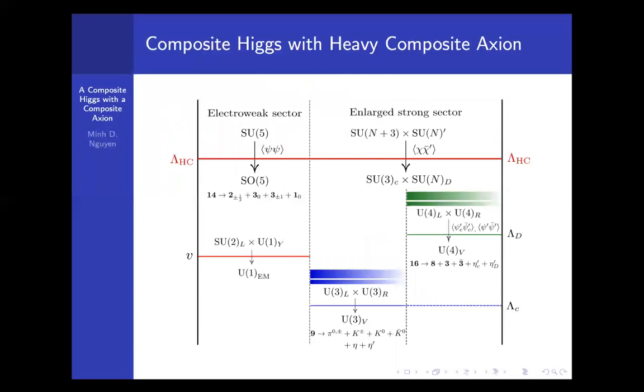This is a cartoon picture of how the model works. We have a global symmetry. If you pick SU(4) hypercolor, then you have SU(5) global symmetry. This coset gives rise to the Higgs doublet. The same hypercolor dynamics also breaks the enlarged strong sector. Give rise to SU(3). This is identified with the QCD. And now the SU(N) can be identified with the axi-color.